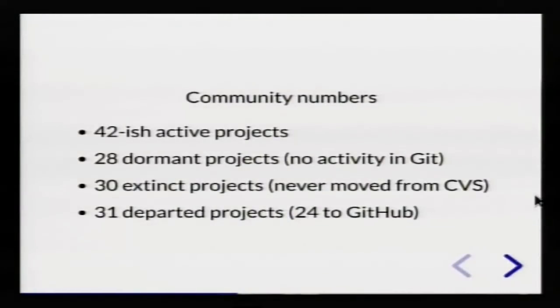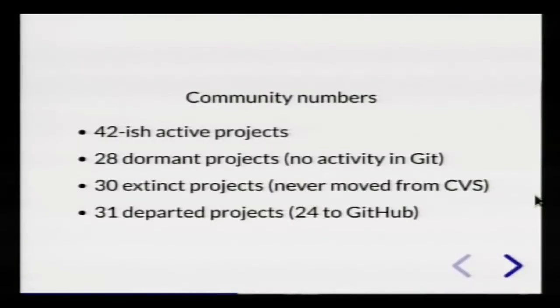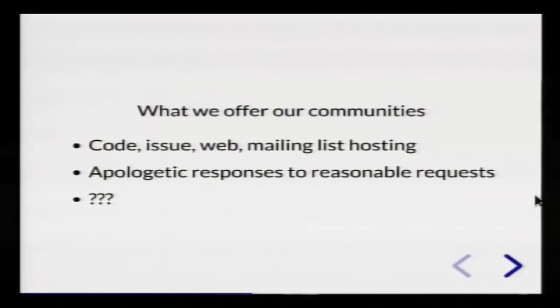To put some numbers to that: depending on how you count, we have 42 things we'd call independent software projects — their own community, fairly active and healthy, and continuing development. We've got 28 projects where for the last five-plus years there's been absolutely no activity; some of those have been forked away elsewhere. We've got 30 projects which never made it off CVS into Git, so they are definitely dead. And while going through the GitLab migration I took stock of what projects we had, and found that 31 of them had just moved somewhere else without telling us — the vast majority went to GitHub.